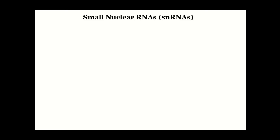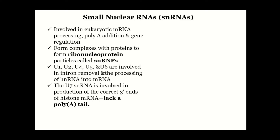Small nuclear RNAs are one type and they are involved in RNA processing and also poly-A addition — remember the poly-A tail — and gene regulation. This RNA is usually complexed with proteins to form ribonucleoproteins, called snRNPs.